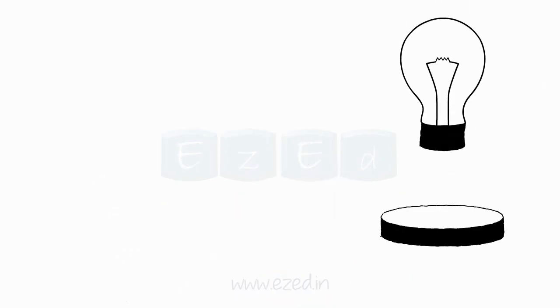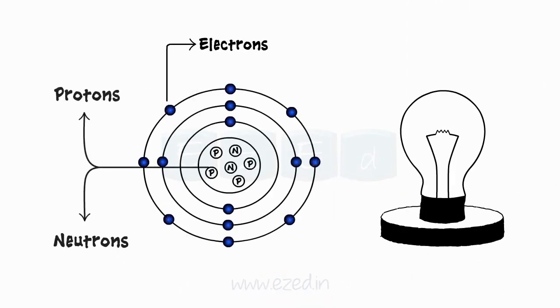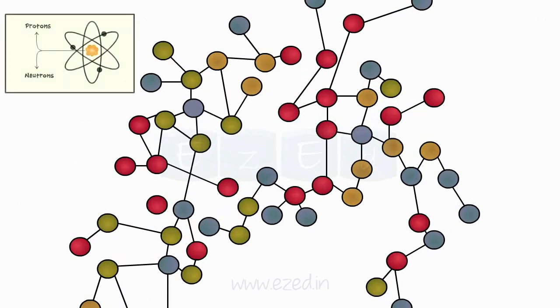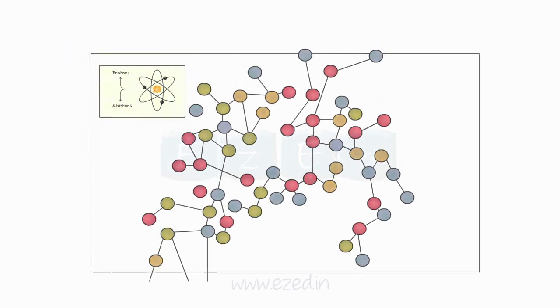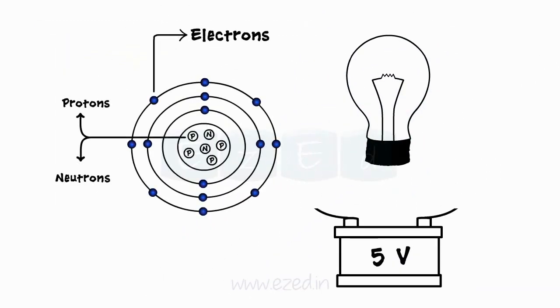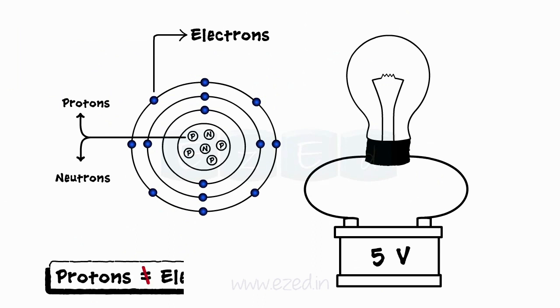Every solid body is a structure of molecules and atoms containing equal number of protons and electrons. At ordinary conditions, these bodies are neutral, but if we apply some external energy to it, such as electricity, a mismatch occurs between the number of electrons and protons and the body starts attaining a charge.